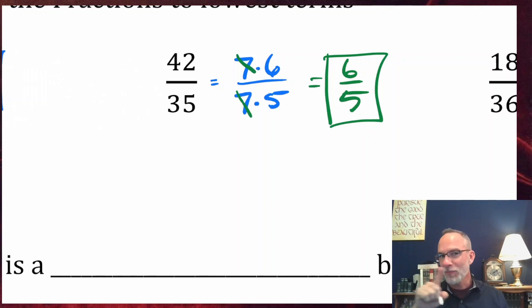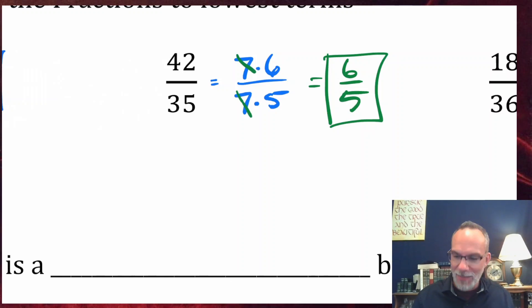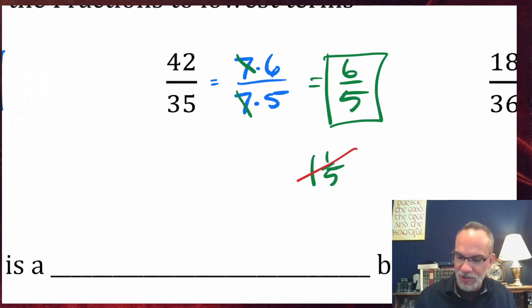In algebra you won't be able to use the division method because you won't know what the numbers are. Some people might say to change 6/5 into a mixed number — one and one fifth — but I hate mixed numbers, and also a ratio is not really a fraction.